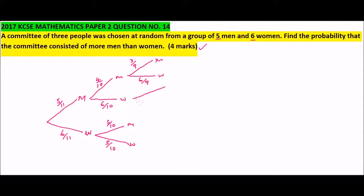In this other branch, we chose a man first then a woman, so men reduced to 4 out of 9. We chose a woman, so women reduced to 5, making the probability of choosing a woman 5/9.